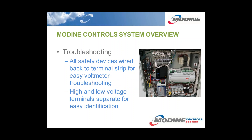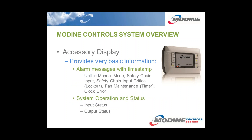Troubleshooting is extremely simple for these systems. Shown on the right is a typical water-to-water control panel. All of the safety devices are wired back to the terminal strip for very easy voltmeter troubleshooting. High and low voltage terminals have been separated for easy installer identification — the block on the top is the low voltage connections, and the block on the bottom right hand corner is all of the high voltage connections. An accessory display is available for purchase with the systems, mainly for very basic information: alarm messages with a time stamp, and system operation and status — basically just a confirmation of what they can see with their voltmeter, showing the status of the inputs and the status of the outputs.